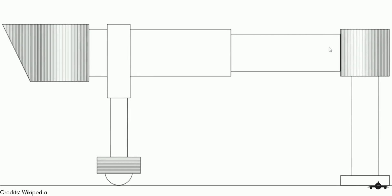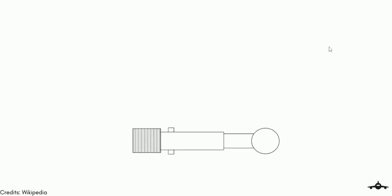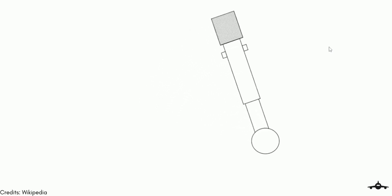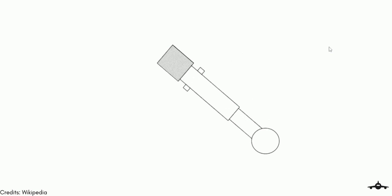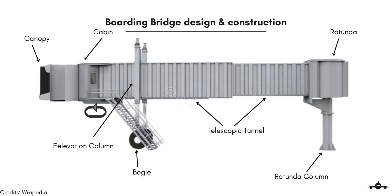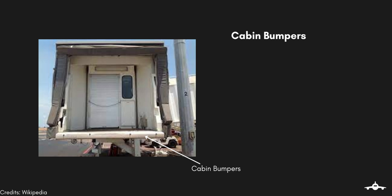Apart from these movements, a passenger boarding bridge can also rotate around its rotunda. This enables it to engage with aircraft parked at an angle with the airport building, and it can move in both clockwise and anti-clockwise directions. The cabin and canopy of the boarding bridge can also rotate in clockwise and anti-clockwise directions to adjust and engage with the aircraft. Cabin bumpers are installed at the end to prevent any damage to the aircraft body. They are fitted with sensors that sense if the bumper is pushed too hard, and this safety interlock ensures that no damage is caused to either the aircraft or the bridge.